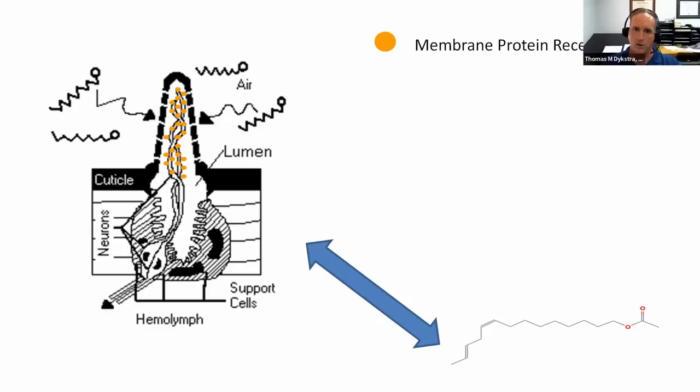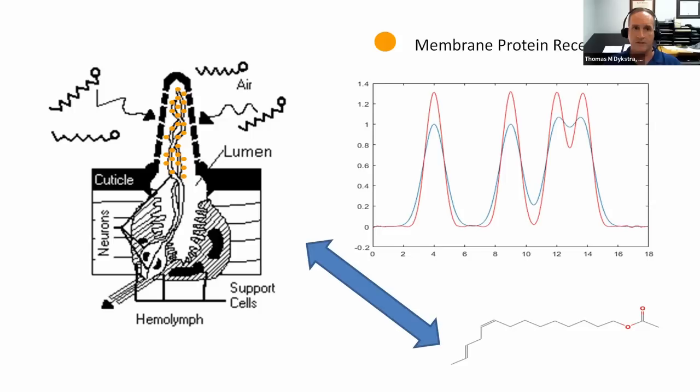To find evidence for resonance, peaks need to line up. In my imaginary graph, the pheromone molecule is the red line with a number of peaks, and the absorption frequencies of the membrane protein receptors are the blue line. You can see they line up very well with one another — they may not have exactly the same amplitude, but they do line up. Therefore we have what is known as a resonant effect between the odorant and the membrane receptors.